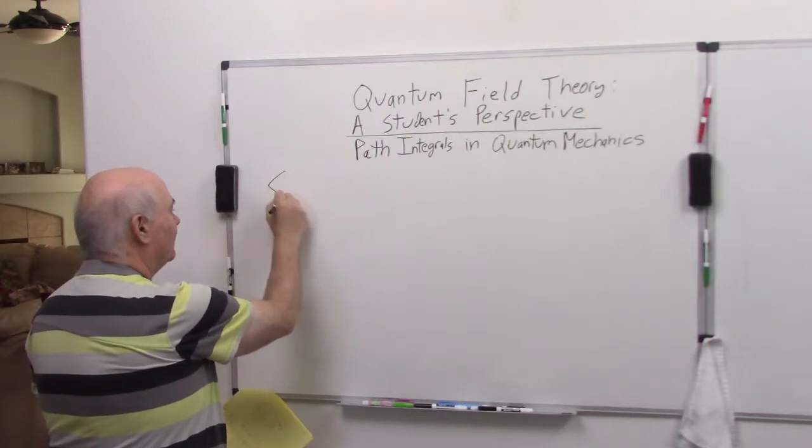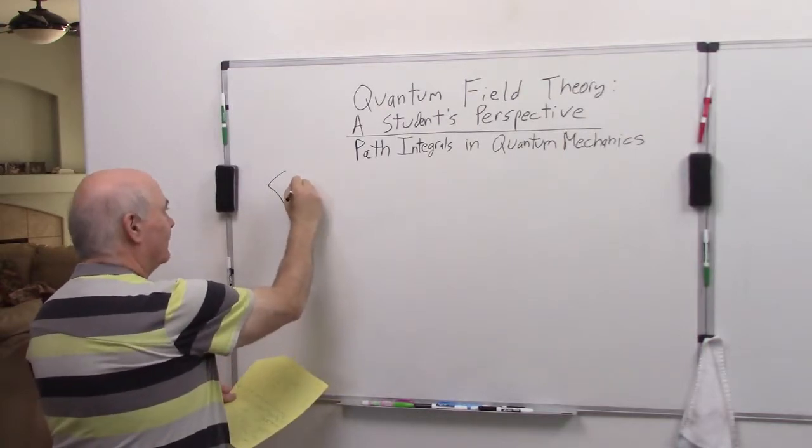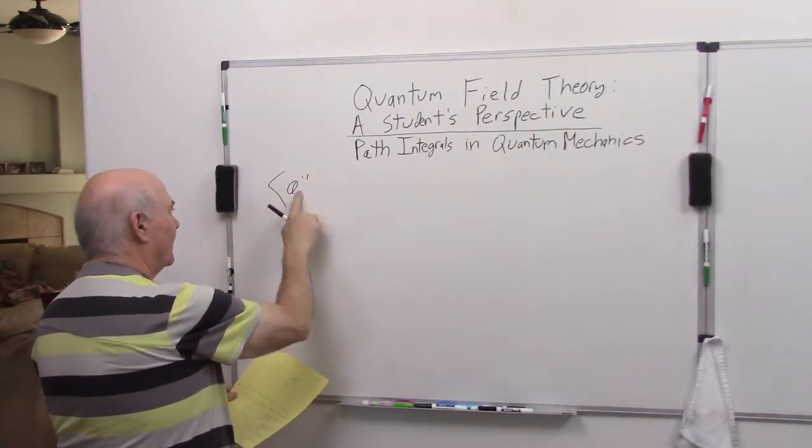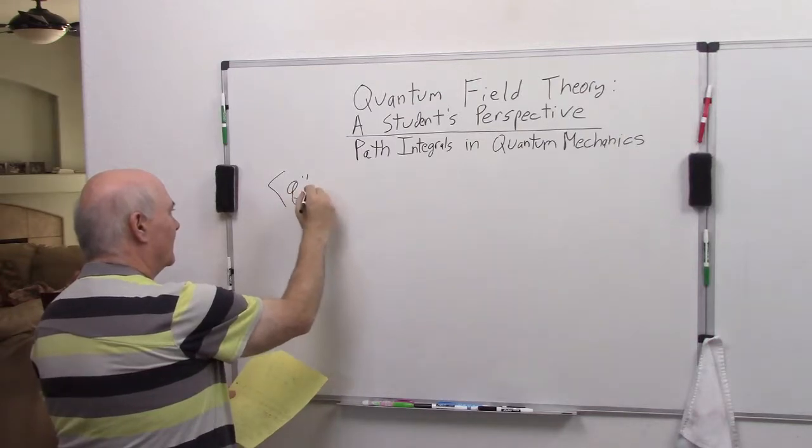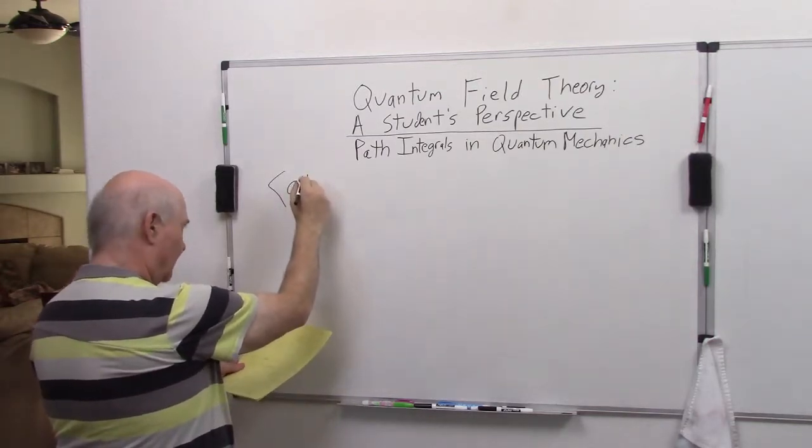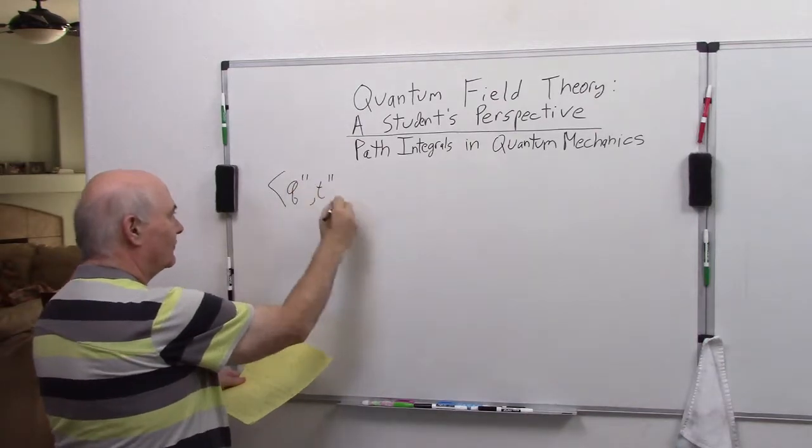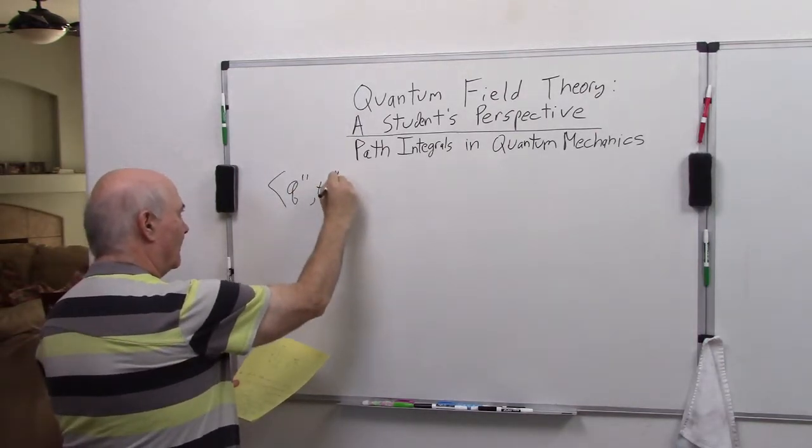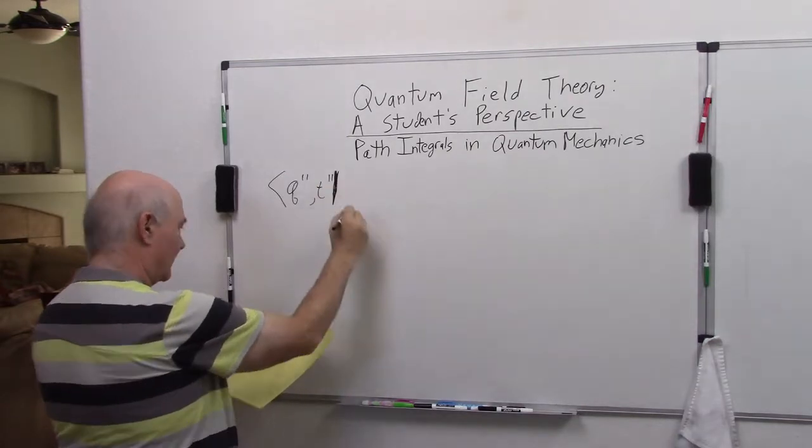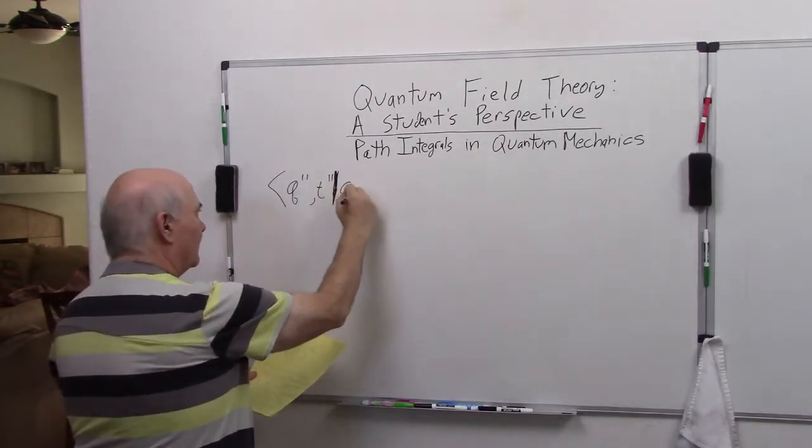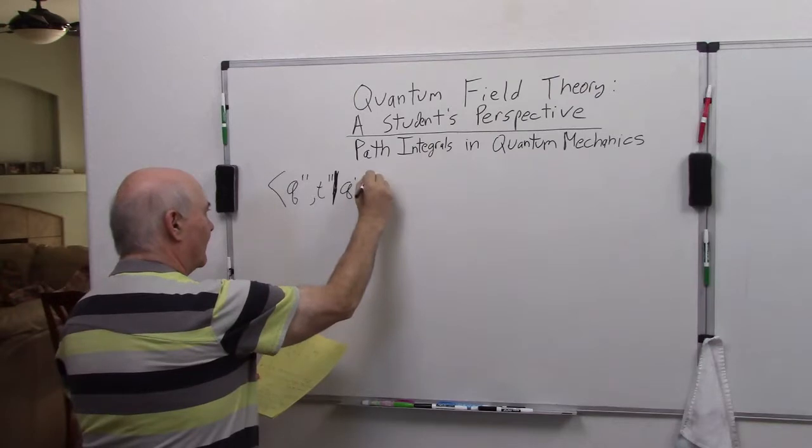Okay, what we essentially want to calculate is the amplitude that we go from q double prime, time t double prime (using q instead of x), the bracket, to q prime, t prime. This is the central thing we want to calculate.